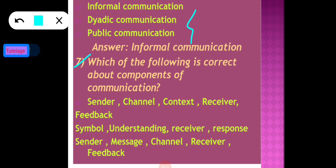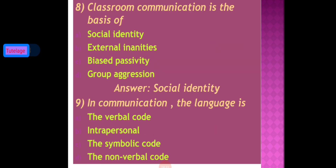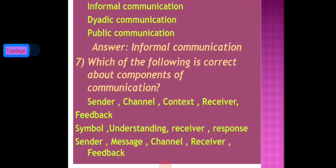The seventh question asks about which option is correct regarding the components of communication — not the process or sequence. However, this question is incomplete as we need one more option to determine the appropriate answer, so we will skip it and move on to the next question.